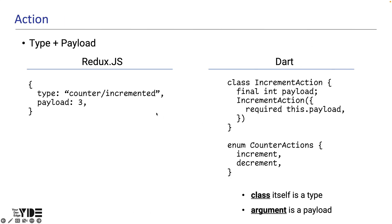Next, we define actions that affect the state. An action consists of the type of action to be done and payload, which is additional data required to perform the action. When using Redux in React, action is defined using a JavaScript object. The type of action to increment the counter is defined as 'counter/incremented'. However, if a string is used, there is a risk of typos and errors. In addition, if you use a string in Dart, you lose the benefit of type checking. So in Dart, when creating an action, instead of using a data type like map, enum or class is used.